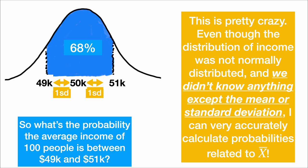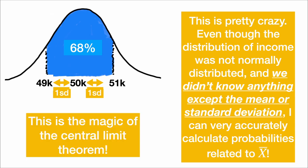This is pretty crazy. Even though the distribution of income was not normally distributed, and we didn't know anything except the mean and the standard deviation, I can very accurately calculate probabilities related to x̄. This is the magic of the central limit theorem.